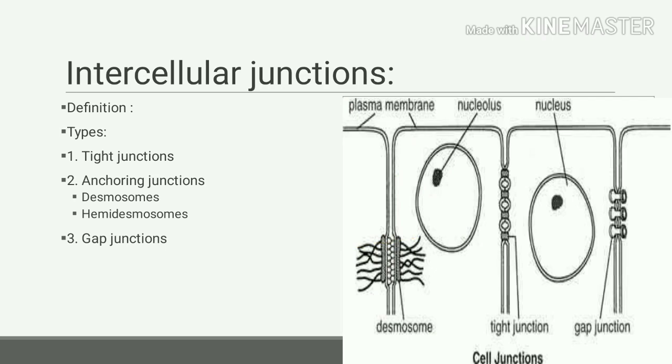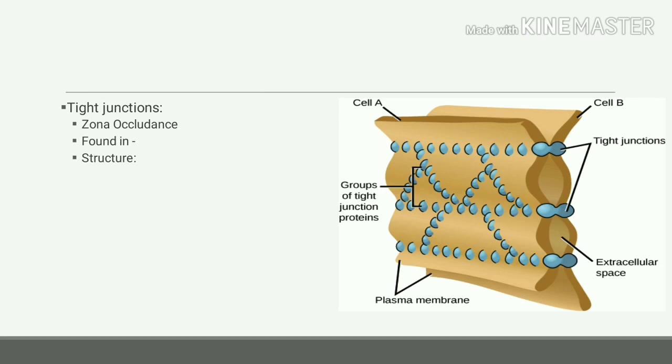Tight junctions are also known as zona occludens and are found in the epithelium of the digestive tract, urinary tract, and hepatobiliary tract. They are also found in neurons and choroid plexus. The outer layer of the cell membrane of neighboring cells fuse together.